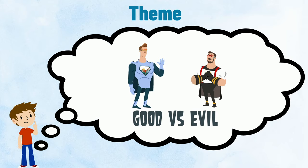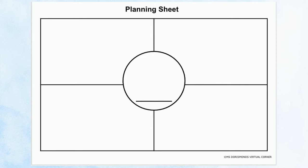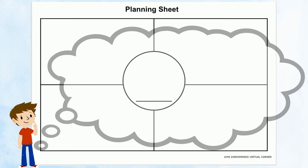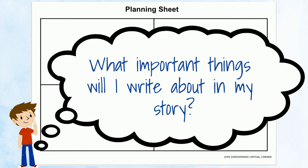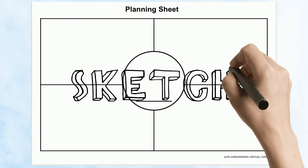Now that I have the elements of my narrative, I will put together a plan for my writing. I can use a graphic organizer or a planning sheet to help me organize my thoughts. First, I need to think about all the important things that will happen in my story. Then I'm going to think about what I should write on each page, and make a quick sketch in each box of my planning sheet to remind me of my story.